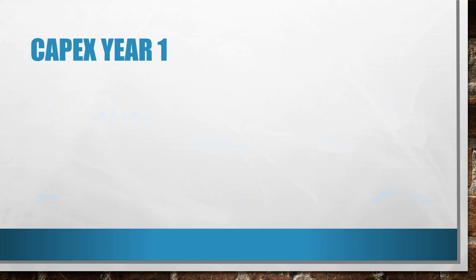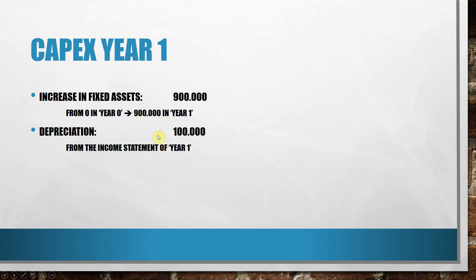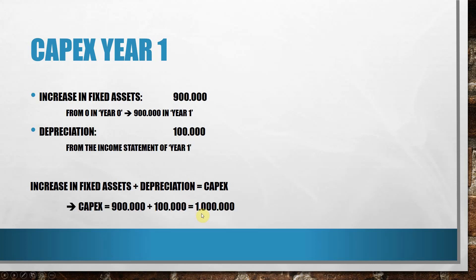We can already apply our capital expenditure formula for year one. The increase in fixed assets in year one is 900,000 euro: in year zero we had no fixed assets, so that was zero, and in year one we have 900,000 euro on the balance sheet — an increase of 900,000. From the income statement we also have depreciation of 100,000 euro. Applying the formula — increase in fixed assets plus depreciation — gives us a capital expenditure of 1 million euro, exactly the initial value of the equipment we bought. The formula provides the correct answer.